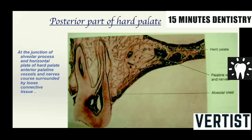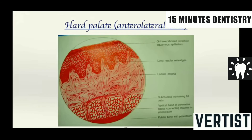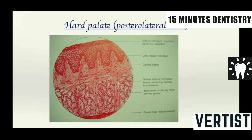The posterior part of the hard palate is at the junction of the alveolar processes and the horizontal plate of the hard palate. In the anterior lateral fatty zone, as we have seen under the microscope, the rete ridges are numerous, broad, long, and regular. The lamina propria is dense and in the submucosa you see adipose tissue. Whereas in the posterior lateral glandular zone, the submucosa shows salivary gland tissue — minor salivary glands are seen in this area.